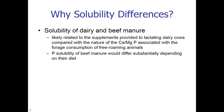The difference in solubility between dairy and beef manure is likely related to the supplements provided to lactating dairy cows compared with the nature of calcium-magnesium P associated with forage consumption by free-roaming animals. It is important to note that P solubility of beef manure would differ substantially depending on diet, and therefore absolute values from different locations may not be comparable.